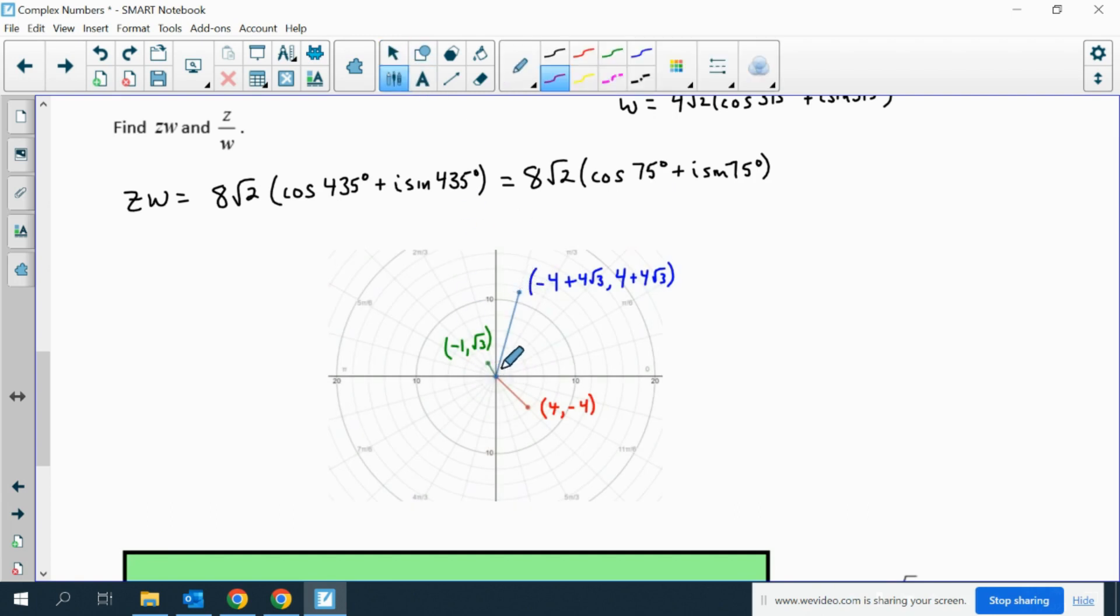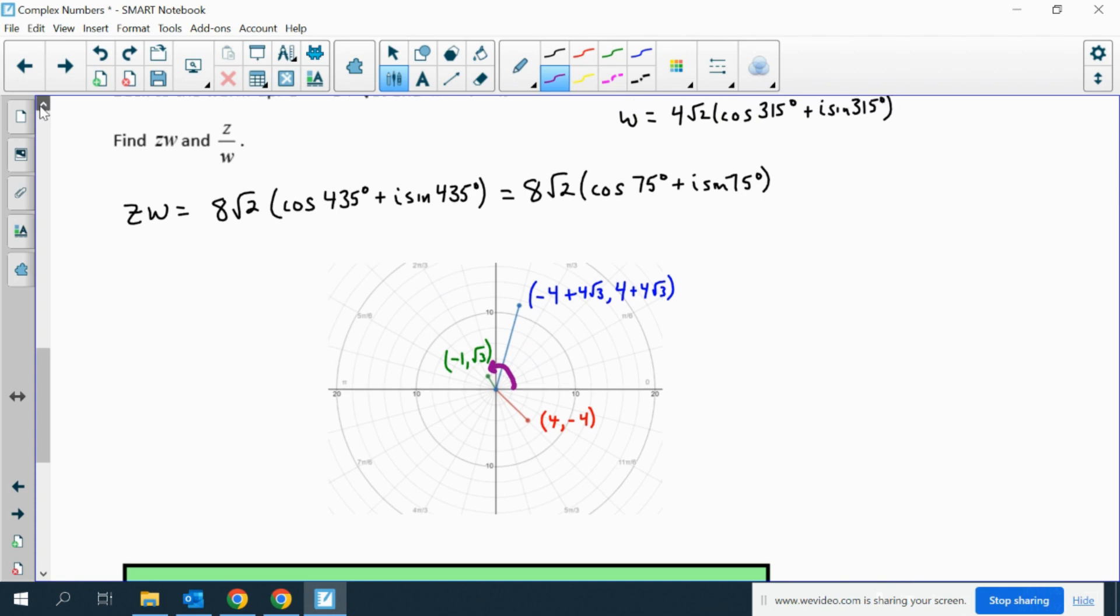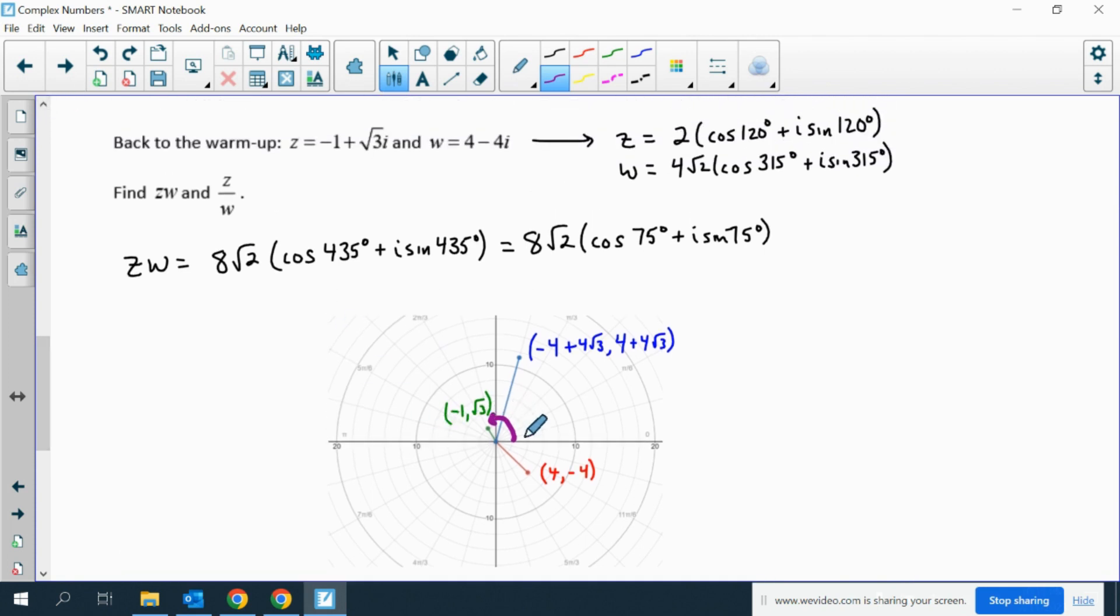Now I'm just putting the picture on here because this one was an angle of 120, this one is an angle of 315. So if I add those together, I get an angle of 435, which is all the way around and then here, which is the same as a 75 degree angle. And this is 8 root 2 away from the radius.